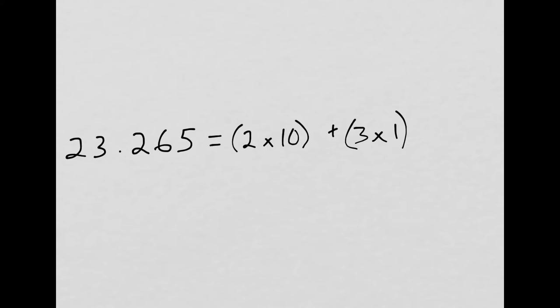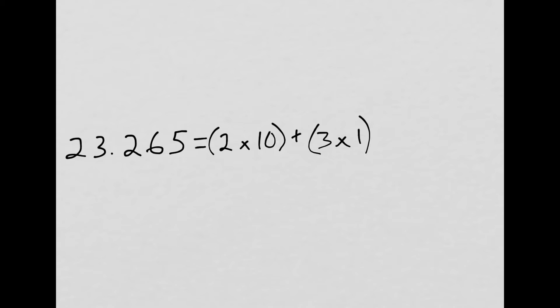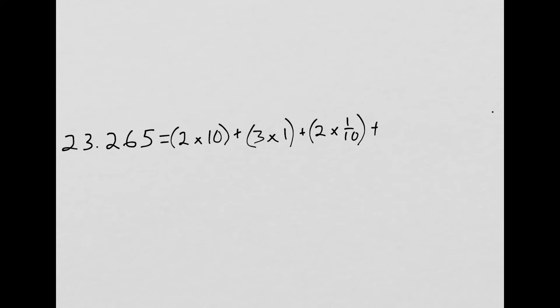Now how are we going to show these decimal fractions? Here's how we're going to write 2 tenths. We're going to say again that there are 2 copies, so 2 times, and I'm going to write 1 tenth as a fraction. And I'm going to add the hundredths like this. I'm going to say that there are 6 hundredths, so 6 times 1 hundredth.